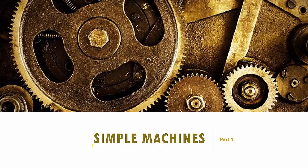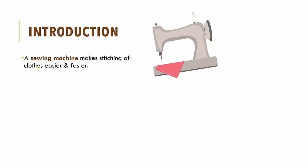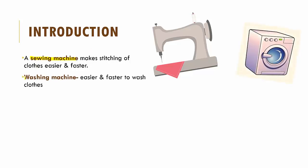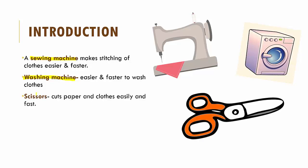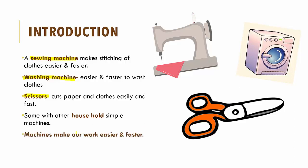Hello children and welcome to a new chapter: Simple Machines. Before we get into the chapter, let's first look at what a machine is. A sewing machine helps us make or stitch clothes very easily and very fast. A washing machine helps us wash our clothes quickly and very easily. Scissors help us cut paper and clothes pretty easily. So machines like these make our work easier.